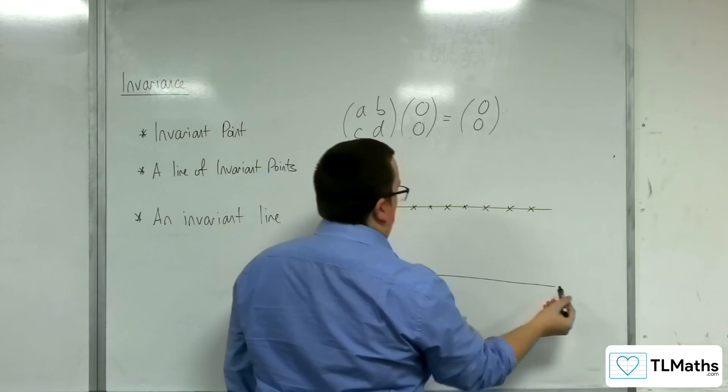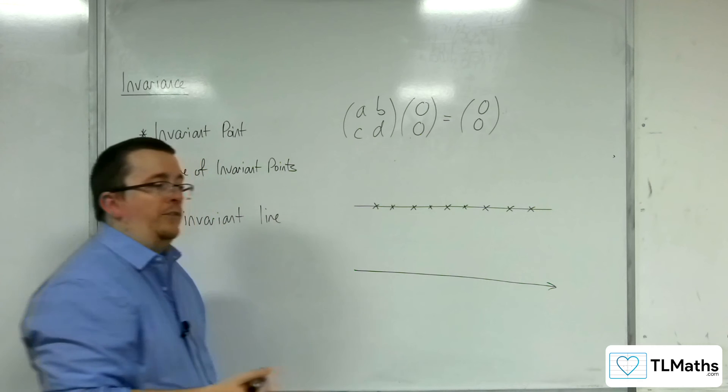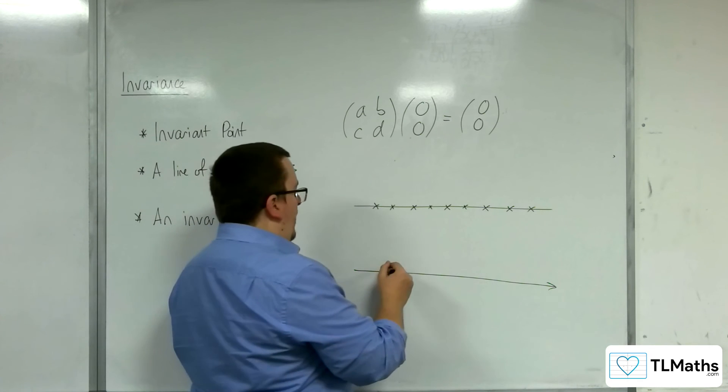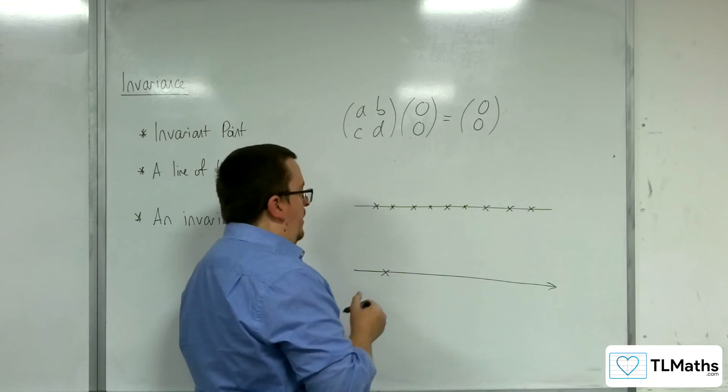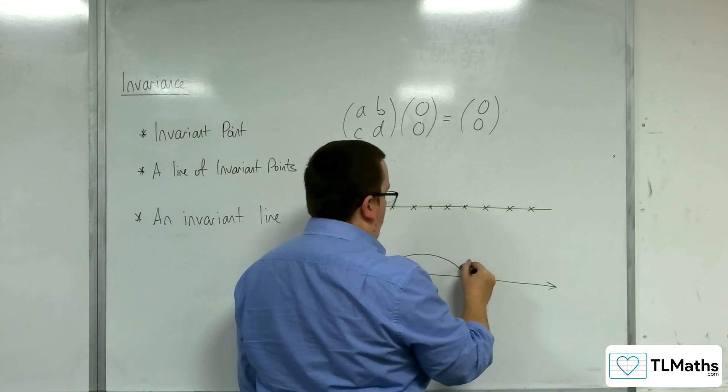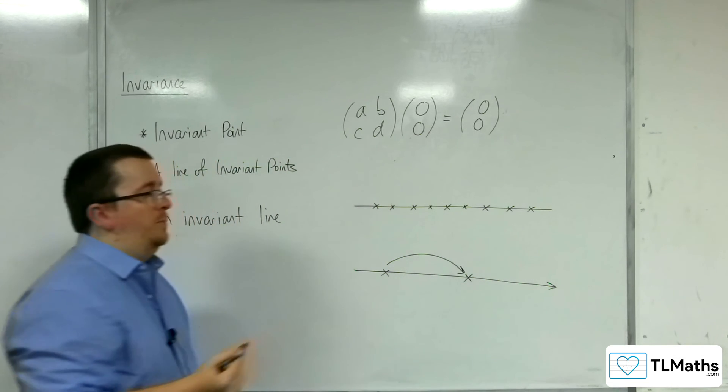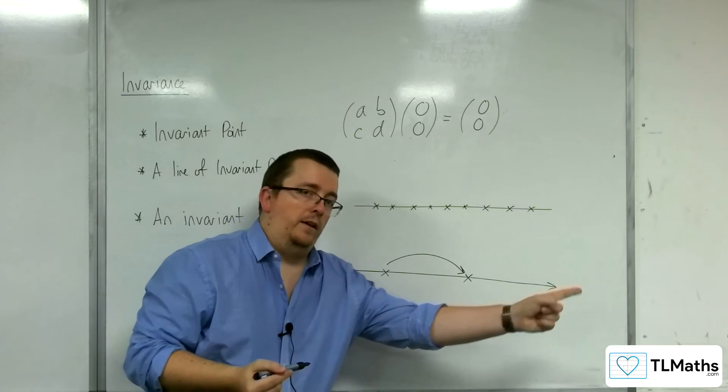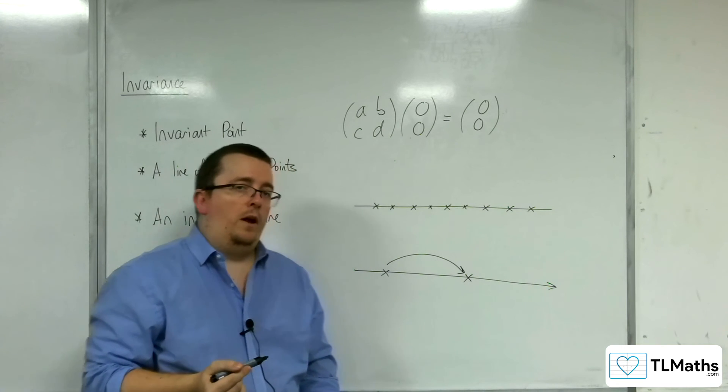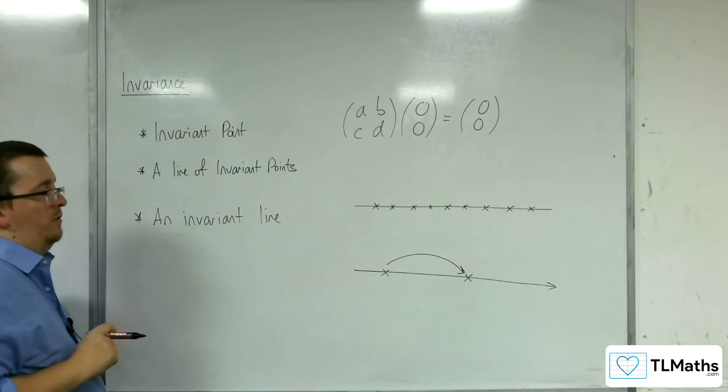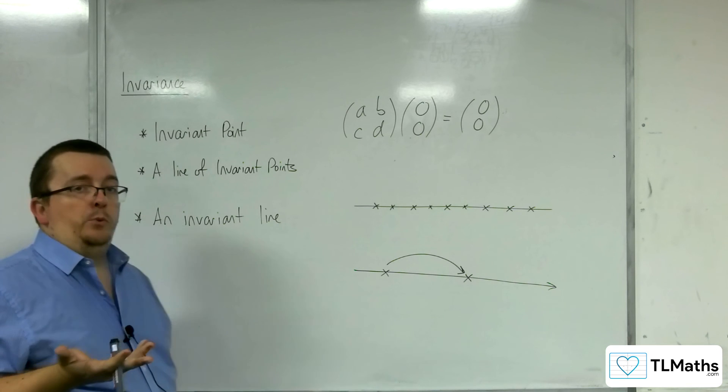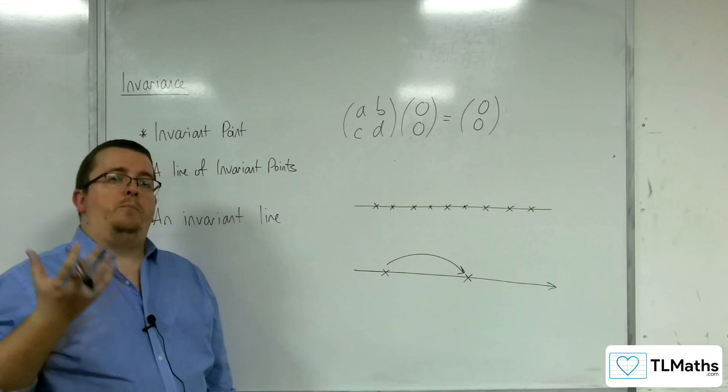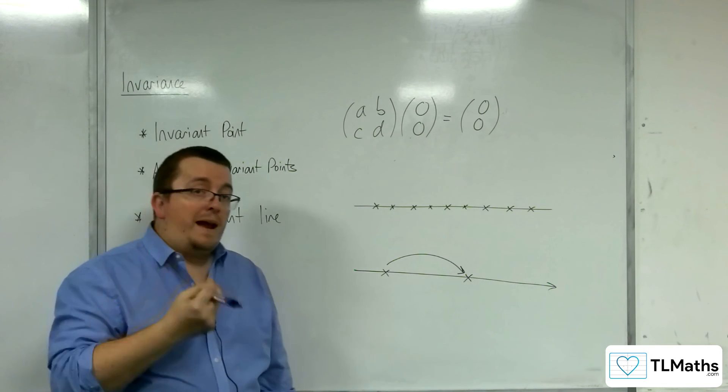So, for example, this could be your x-axis. And you have points that are on the x-axis which are mapped along it. So that could be a stretch parallel to the x-axis or in the x-direction by factor 2, say, for example. So the points that are on the line remain on the line.